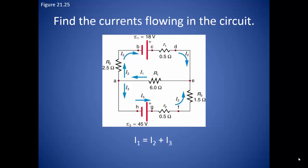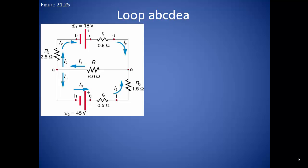We actually can define three different loops in this diagram. One loop will follow all around the outside. Another loop will follow from A to B to C to D to E and back to A. The third loop will follow from A to H to G to F to E and back to A. So let's start with loop A, B, C, D, E, A.